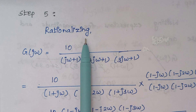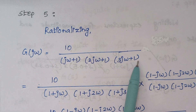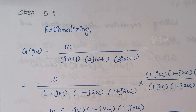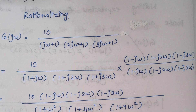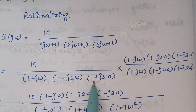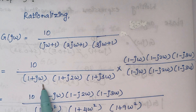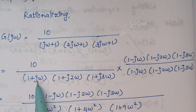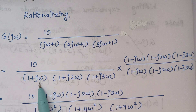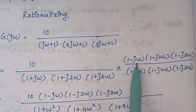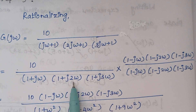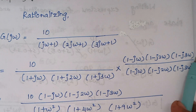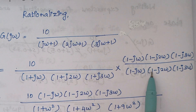Step 5 is rationalizing. We replace S with jω in the given problem. Rationalizing means introducing a minus sign in front of the imaginary coefficient. We rewrite each denominator term: (1+jω) becomes conjugate (1−jω), (1+j2ω) gets conjugate (1−j2ω), and (1+j3ω) gets conjugate (1−j3ω). So we multiply and divide by these same conjugate values.